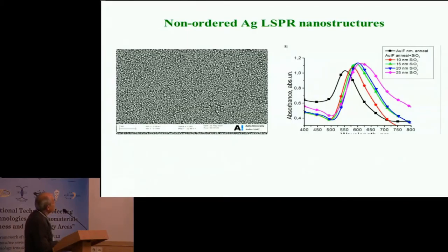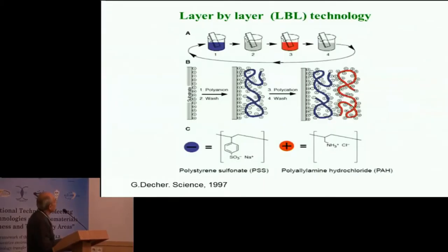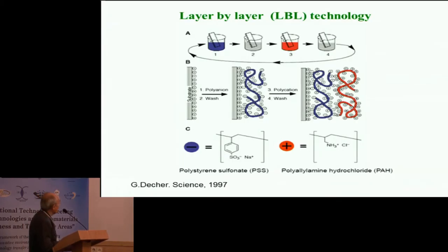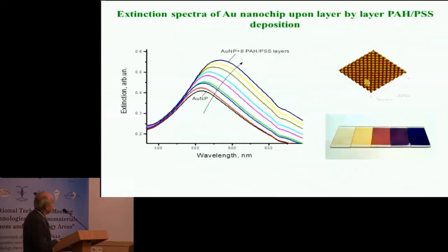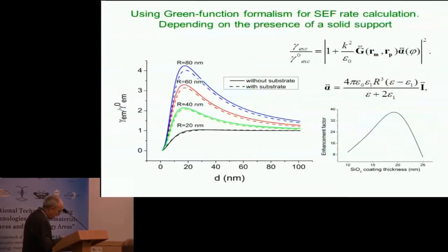It is known that to enhance the fluorescence, we must cover the nanoparticles with a dielectric layer, which can be different dielectrics. We use SiO2 with different thicknesses, and you can see the spectra for different thicknesses of SiO2. We also use layer-by-layer (LBL) technology with differently charged polymers, which allows us to make spacer layers with different thicknesses and different numbers of layers. This is a precise technique because one layer is close to 2 nanometers, so we can precisely define the thickness of the dielectric on the surface.